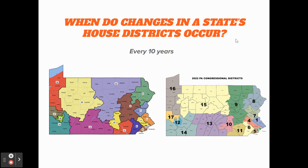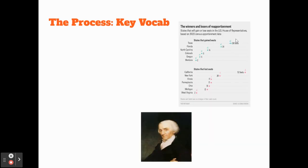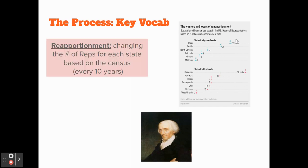There are 18 districts on the left-hand side and 17 on the right-hand side. Every 10 years, we go through the census process when we try to count up how many people live in each state. It's not an exact science, but we do our best to figure out population changes over that 10-year time period.